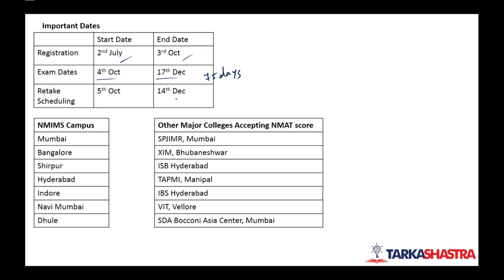NMIMS has some 6-7 campuses across India and in Mumbai campus they provide MBA, PGDM, Pharma and HR. These are the 4 programs which they provide in Mumbai campus. Rest all the campuses like Bangalore, Shirpur, Hyderabad, Indore, Navi Mumbai, Dhule provide only PGDM.